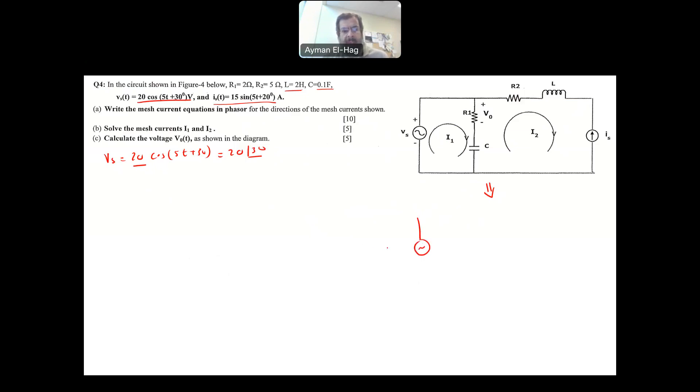You cannot represent them as phasors with one cosine and one sine because there is a phase shift between the cosine and the sine. I usually convert everything into cosine functions. You can convert everything to sine if you are comfortable, as far as both the sources are changed to either sine or cosine. So I will keep the cosine as my reference, so I will take the magnitude 20, and the angle will be 30. So my Vs will be equal to 20 angle of 30.